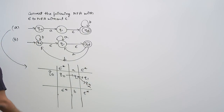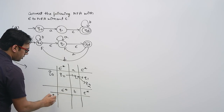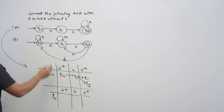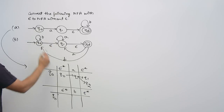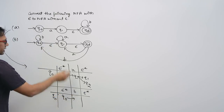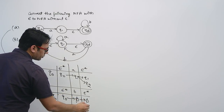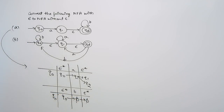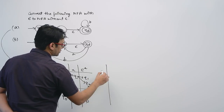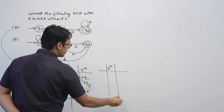Now for symbol B: if you are at Q0, the epsilon closure of Q0 is Q0 itself. If you are at Q0 and seeing symbol B, there is no transition defined, therefore we will go to phi.